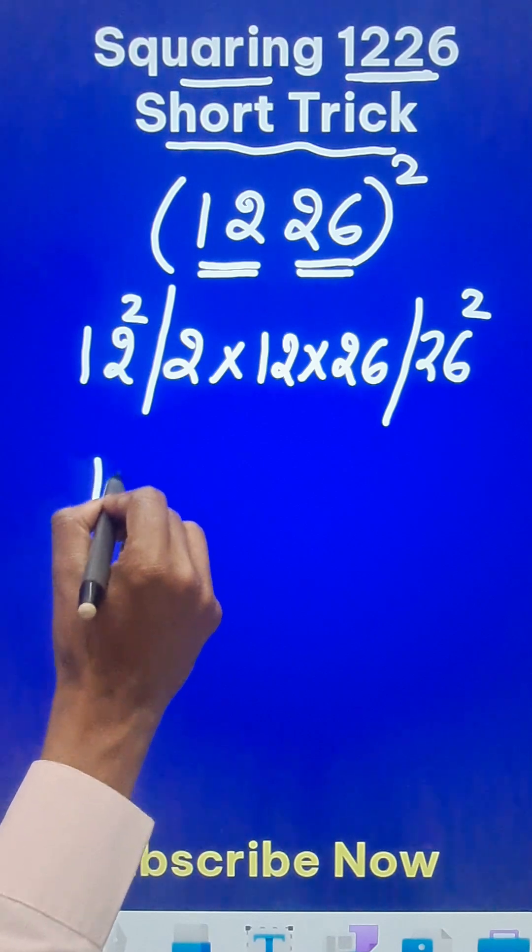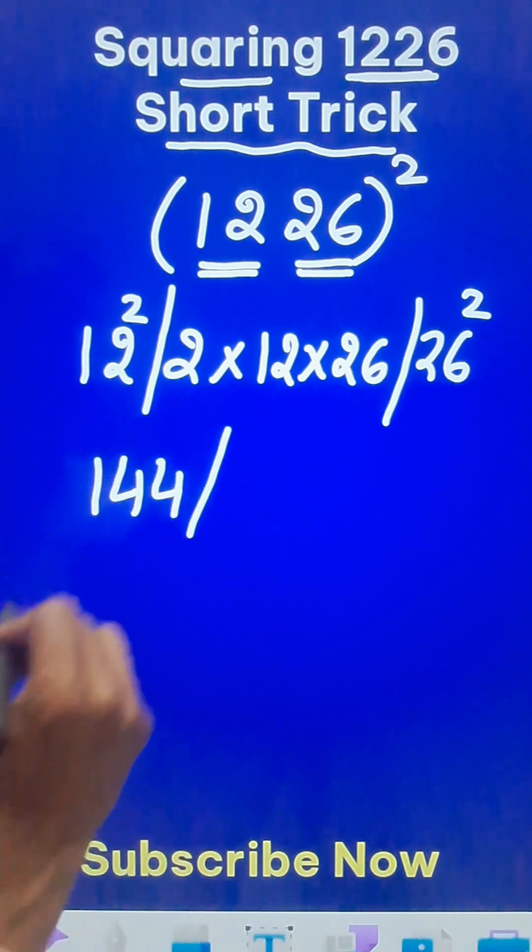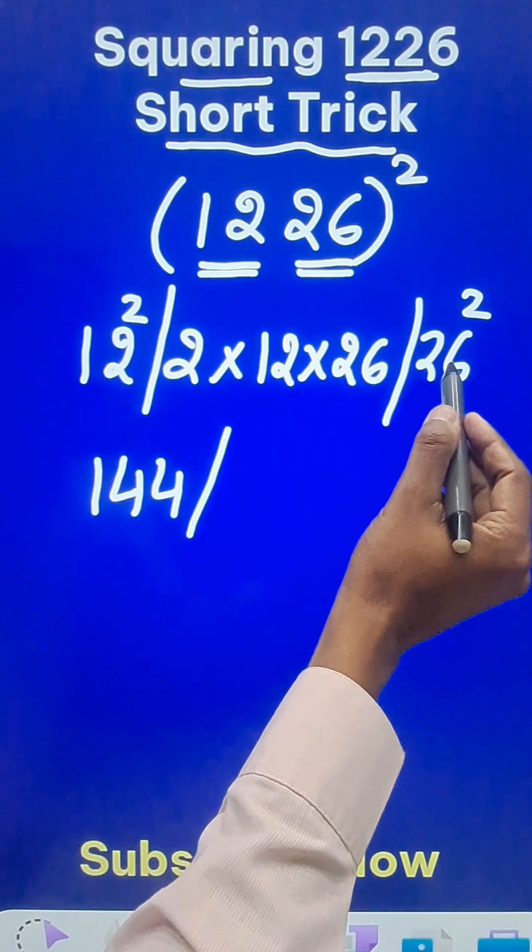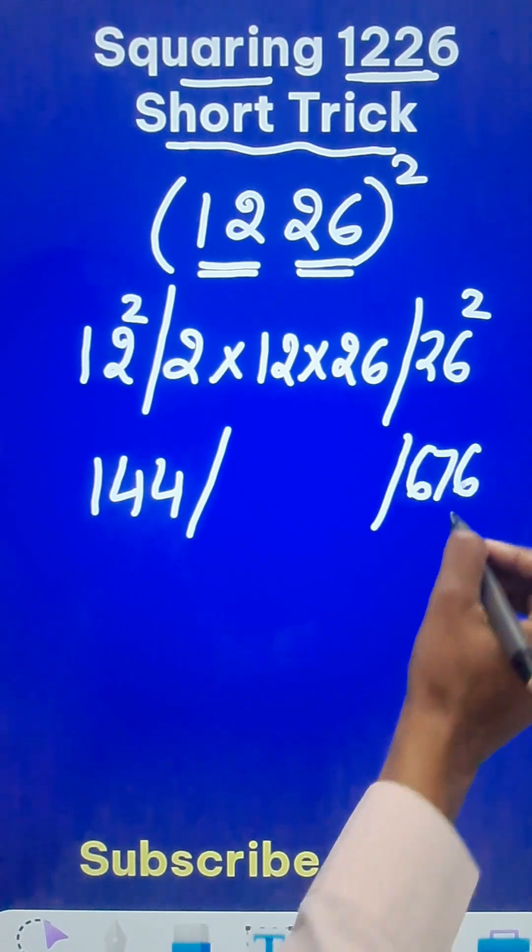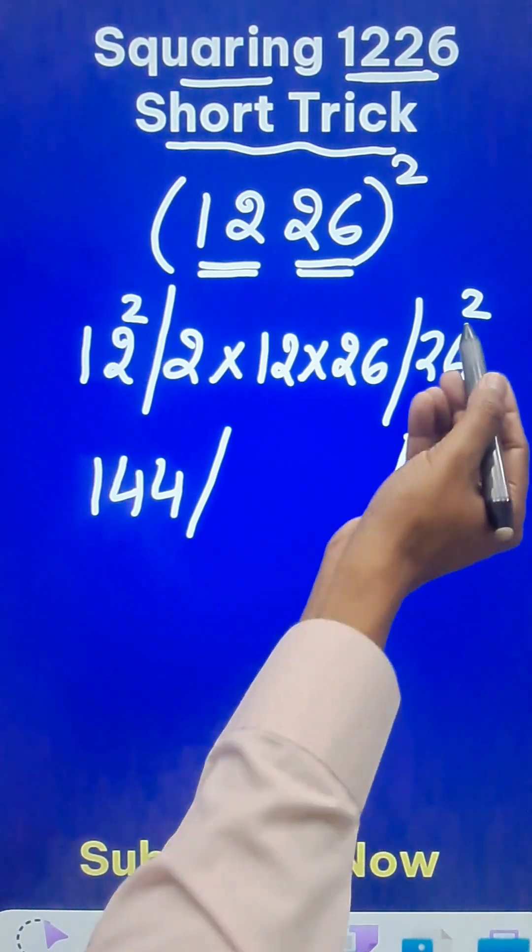12 square we already know is 144. All you need to do is to find 26 square. I know that square of 26 is 676, but if you don't know you can use the short trick for that also.